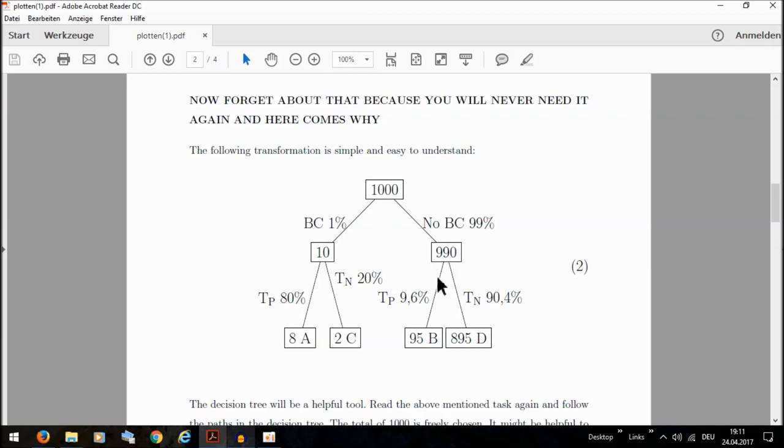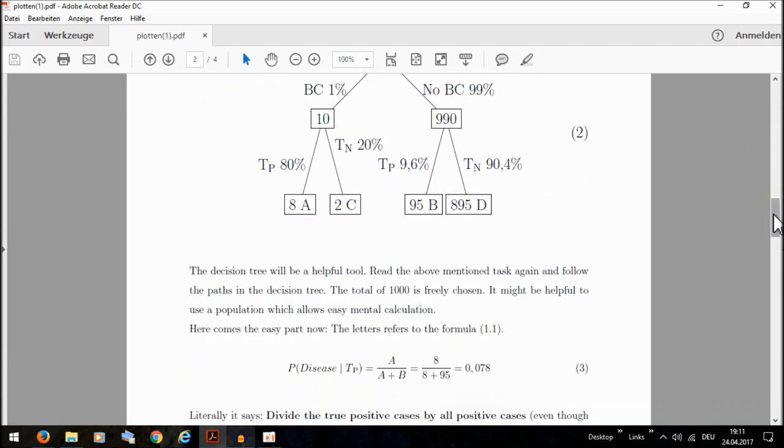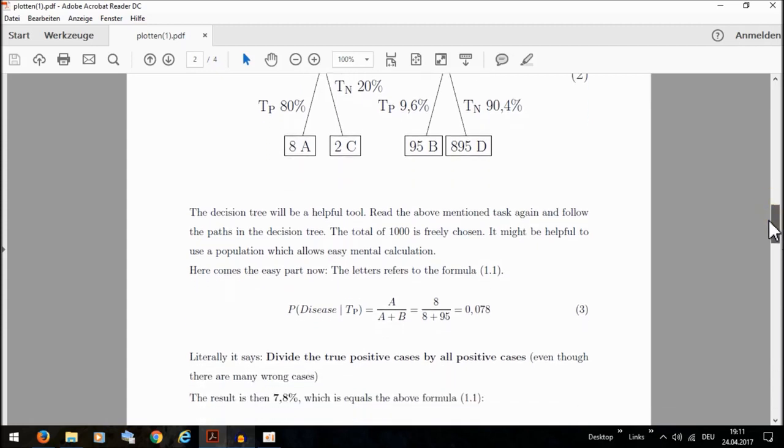If you consider the numbers given in formula 1, it's gonna be easy. We divide the true positive cases, like 8 people, and consider all positive test results.